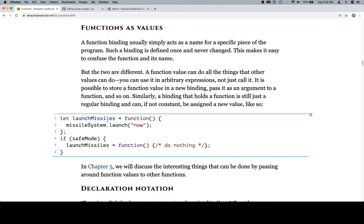So anyway, let launchMissiles be a function that missileSystem.launch('now'). And then if safeMode - so we've got some binding called safeMode. So if we are in safe mode, likely meaning if safeMode is equal to true, launchMissiles is now going to be equal to a function that doesn't do anything.